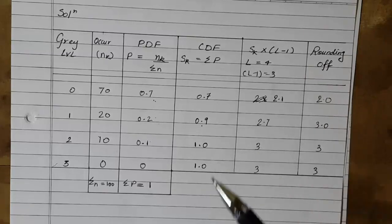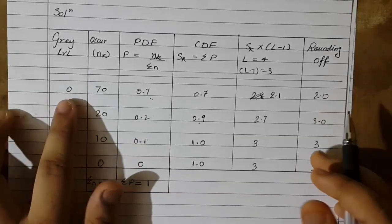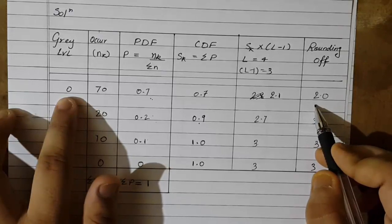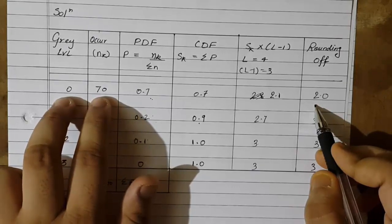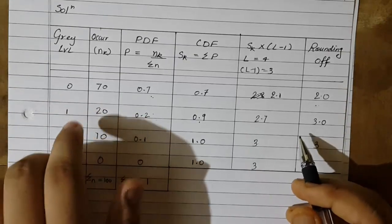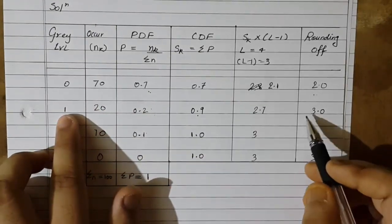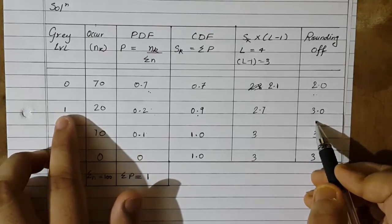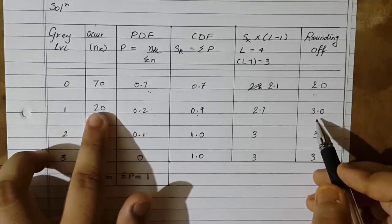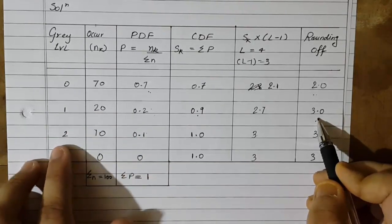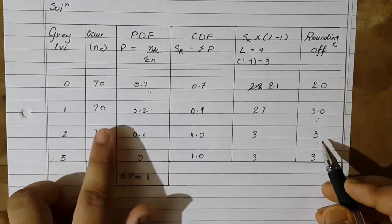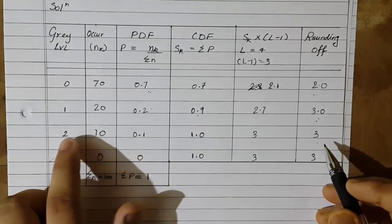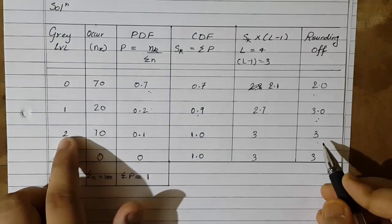We now use the last column to map the old gray levels to new gray levels. For old gray level 0, we obtained value 2, so all 70 occurrences of gray level 0 will be assigned to new gray level 2. For old gray level 1, we obtained value 3, so its 20 occurrences go to gray level 3. For old gray level 2, we also obtained value 3, so its 10 occurrences also go to gray level 3.